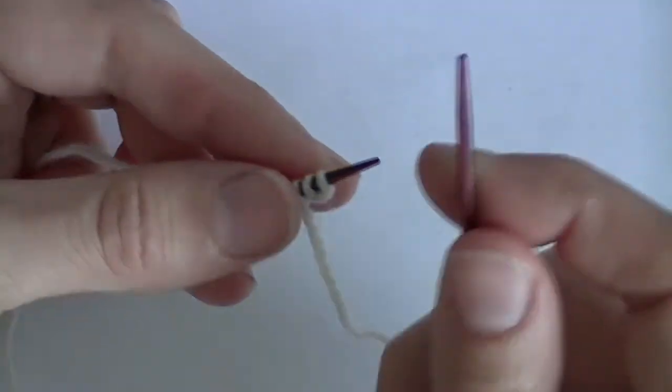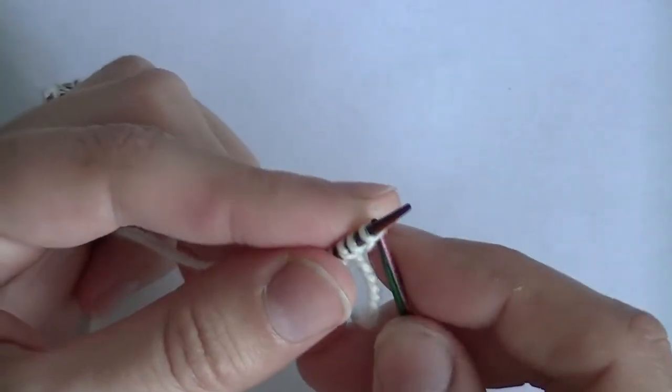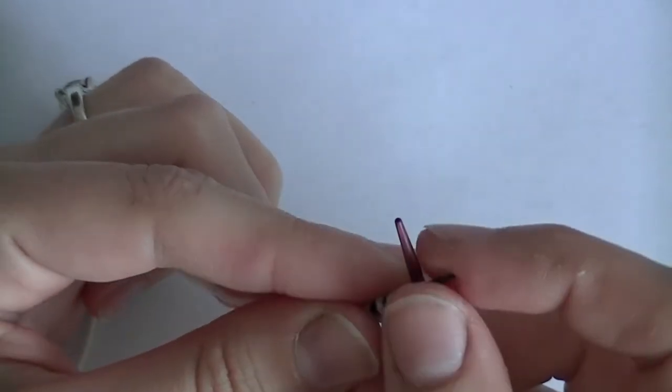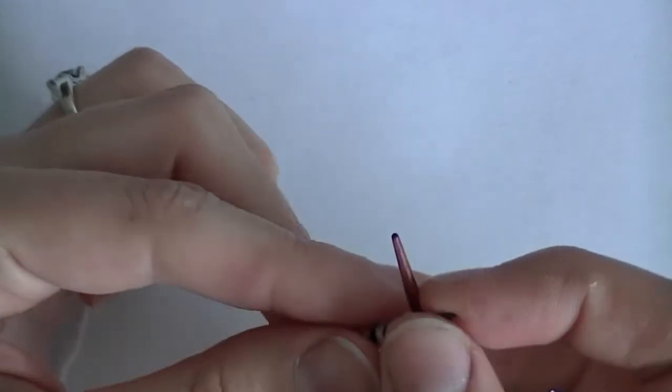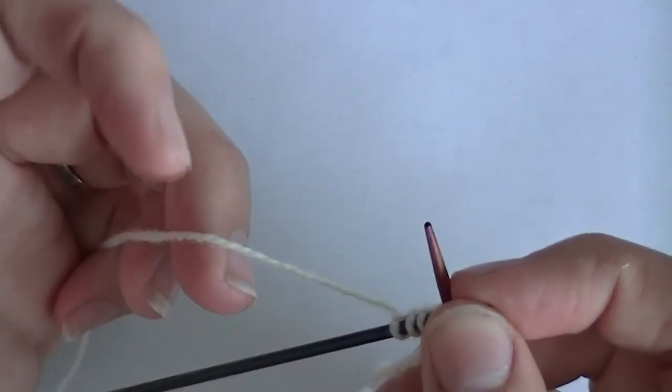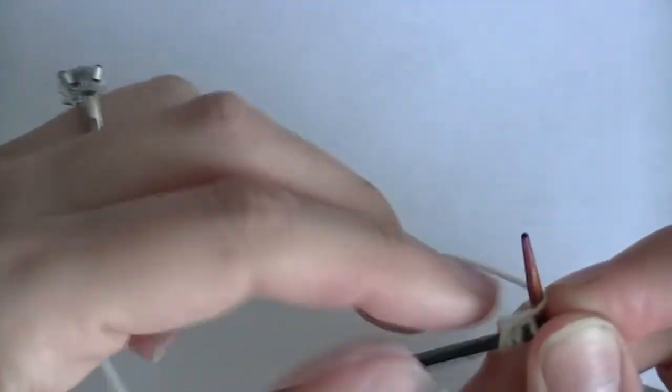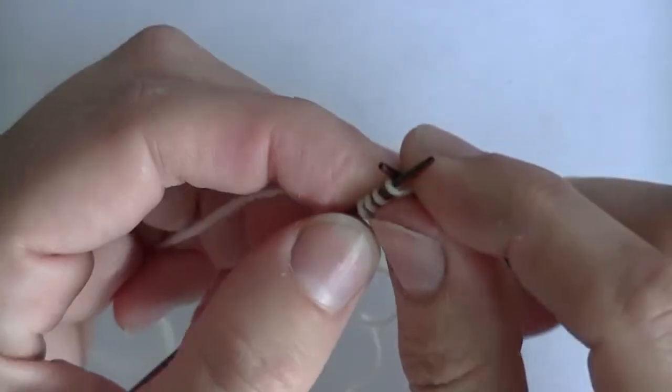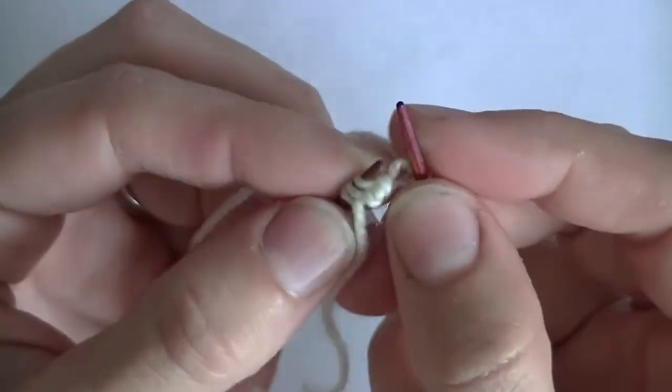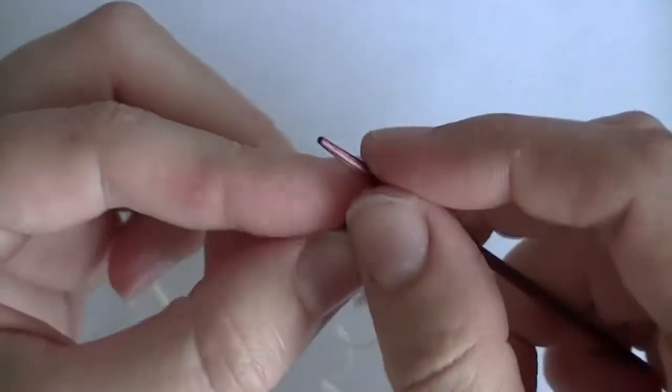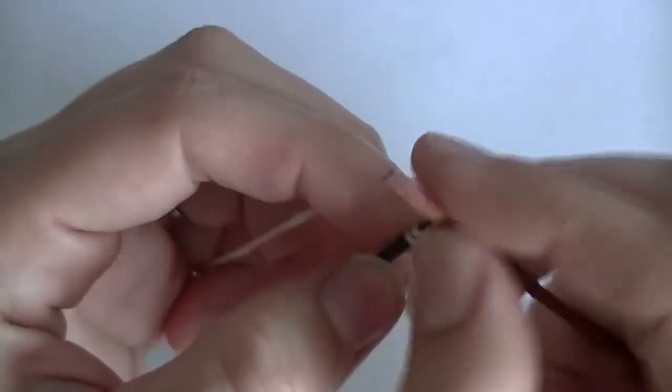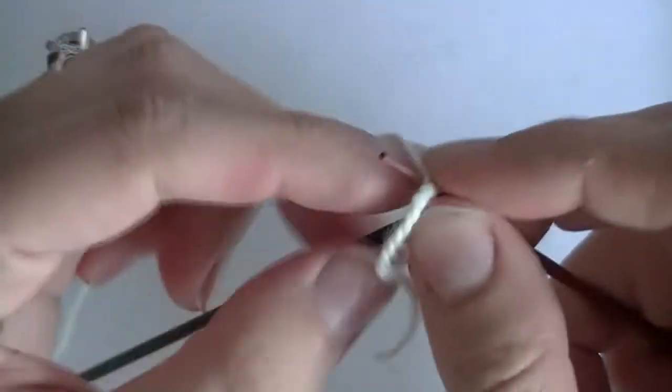And grab your other DPN. We're going to insert it into our first stitch, just like we would knit anything else. And we're going to bring our working yarn all the way from the back stitch, all the way up here, and knit. And we'll knit the rest of our stitches, just like normal now.